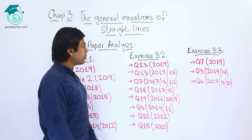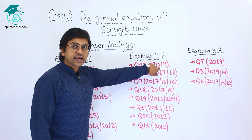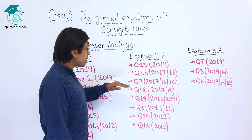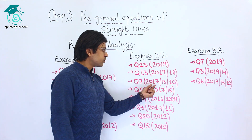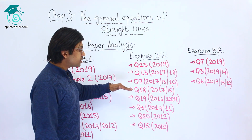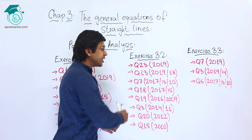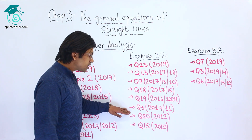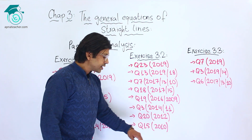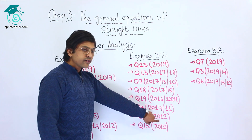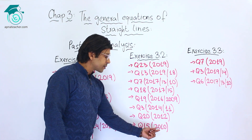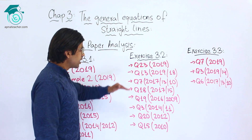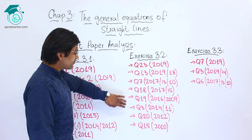In Exercise 3.2, question number 23 was asked in 2019. Question number 13 was asked in two years: 2019 and 2018. Question number 7 was asked three times: in 2017, 2013, and 2010. Question number 18 was asked in two years: 2017 and 2015. Question number 19 was asked in 2016 and 2009. Question number 3 was asked in 2014 and 2011. Question number 20 was asked in 2012. Question number 15 was asked in 2010. In Exercise 3.2, a total of 8 questions have been asked in the last 10 years.